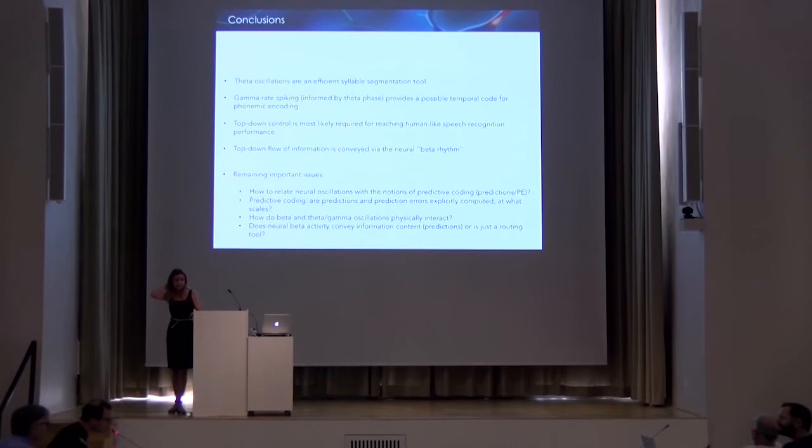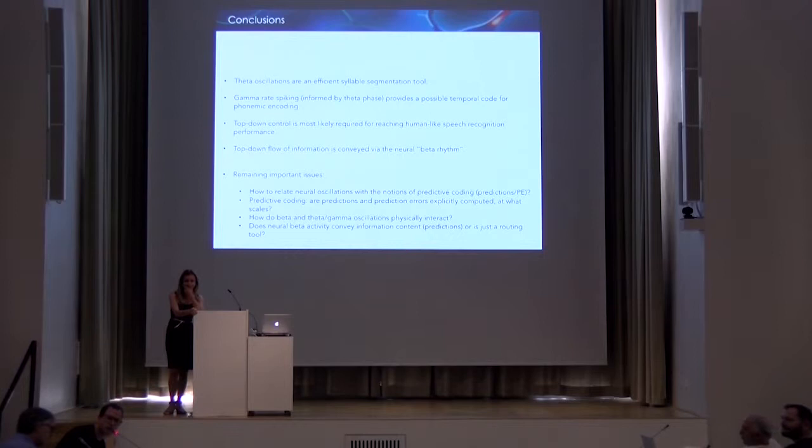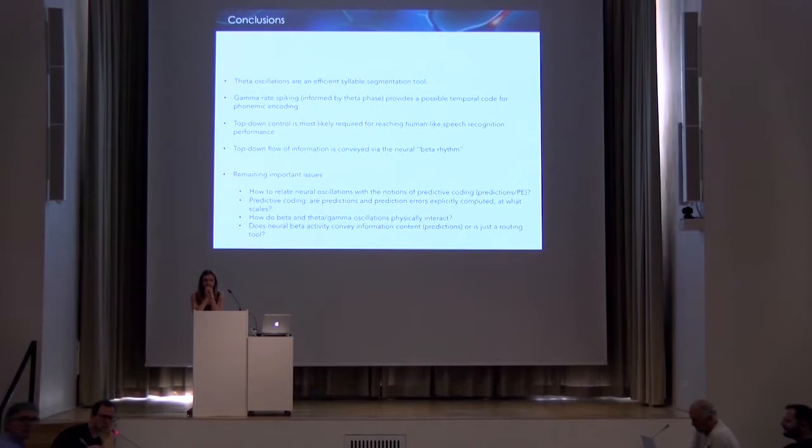The remaining important issues for us are how to relate neural oscillations with the notions of predictive coding and predictions and prediction errors. Are predictions and prediction errors explicitly computed at what scale? How do beta and theta gamma oscillations physically interact? And does a neural beta activity convey information content predictions or it's just a routing tool? Thanks for your attention. Okay, so thanks Anne-Lise. I'm sure there are many questions. So where's the microphone? So you want to go around?